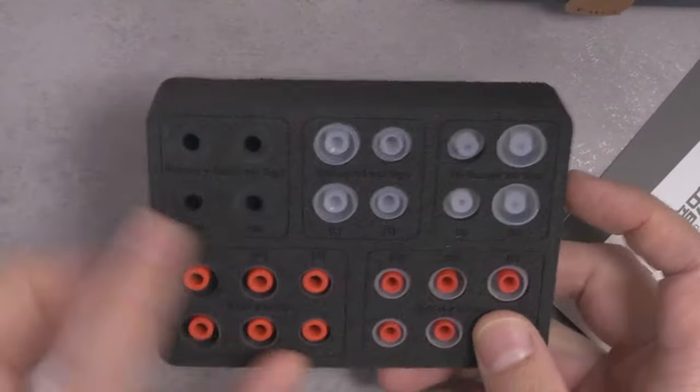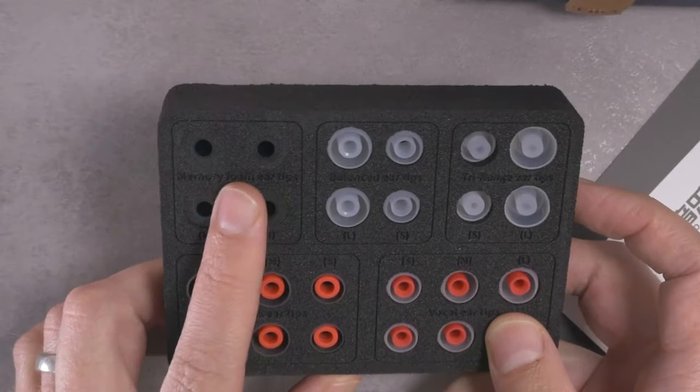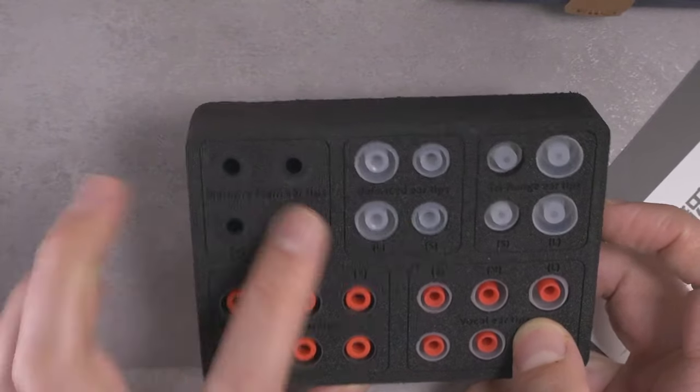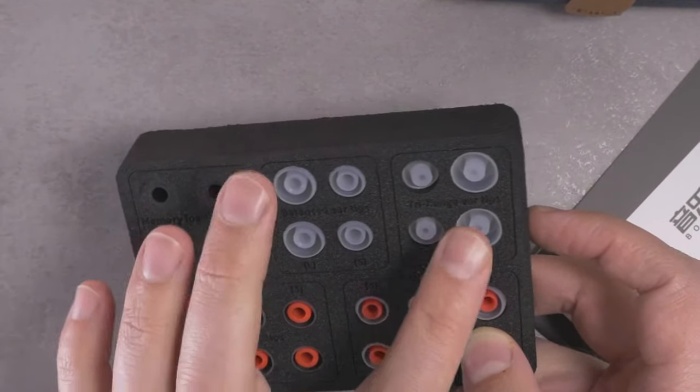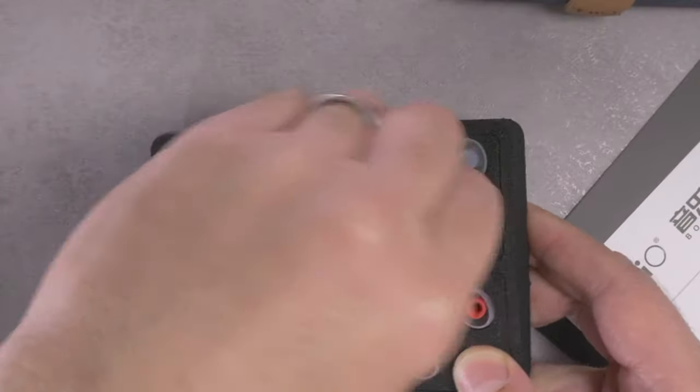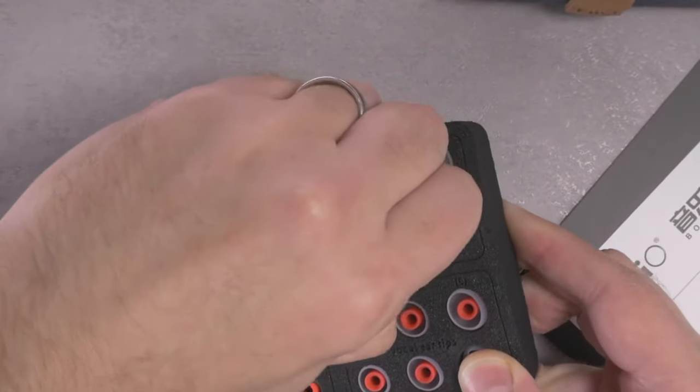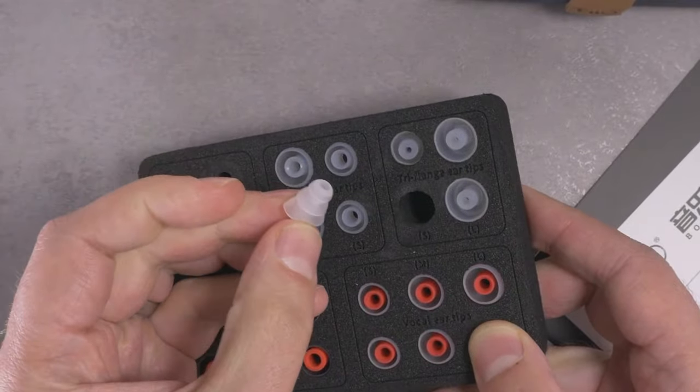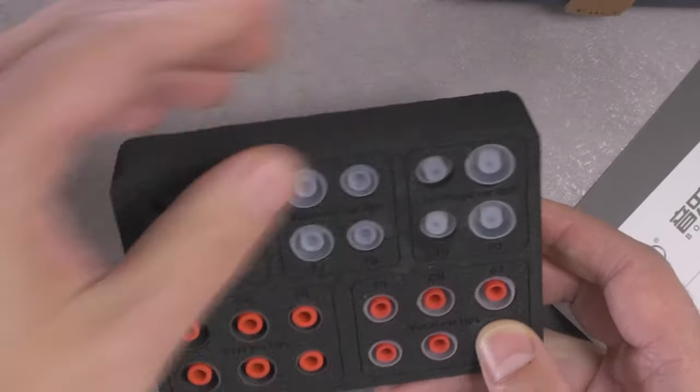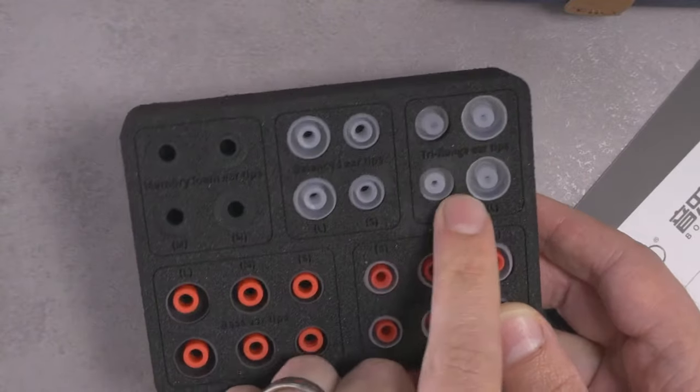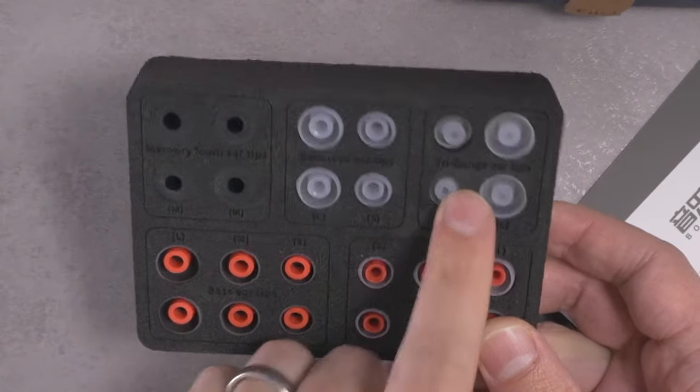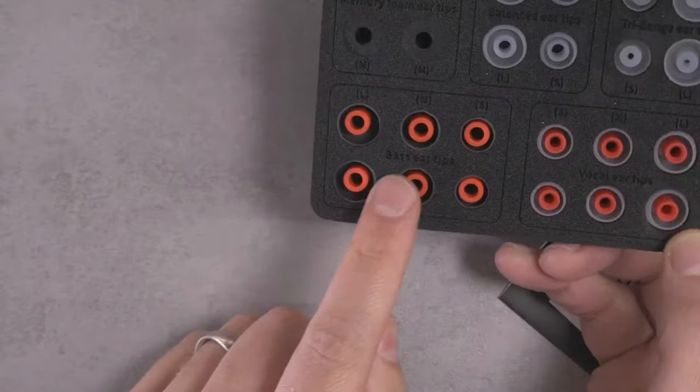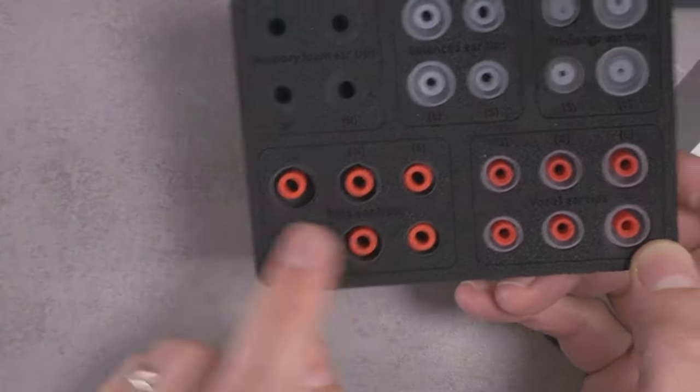Here we've got your selection of tips and it is quite the selection, which is fairly typical for Fiio. They do also make some general distinction between them. This is the memory foam ear tips. They call these balanced ear tips. These are tri-flange, which I want to see what that looks like. What does Fiio tri-flange look like? Are they trying to be Etymotic? They are trying to be Etymotic. That's also a really narrow nozzle. Interesting.